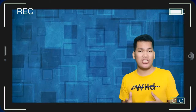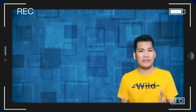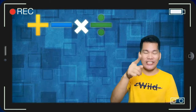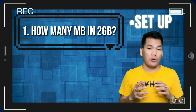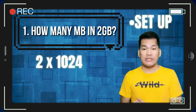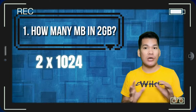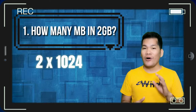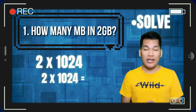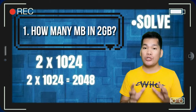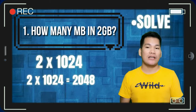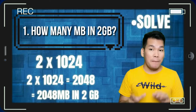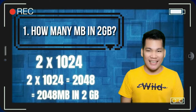So what fundamental operation are we going to use? Is it multiplication? Correct — that's multiplication. For setup, we have 2 times 1024. And to solve, 2 times 1024 equals 2048. Therefore, the answer is 2048 megabytes in 2 gigabytes.